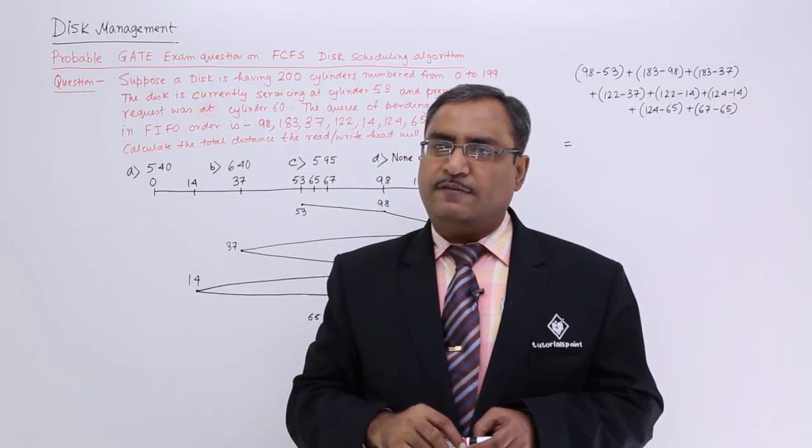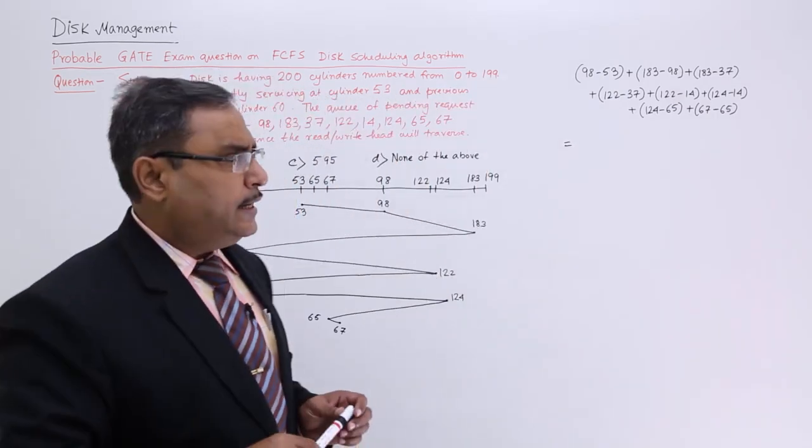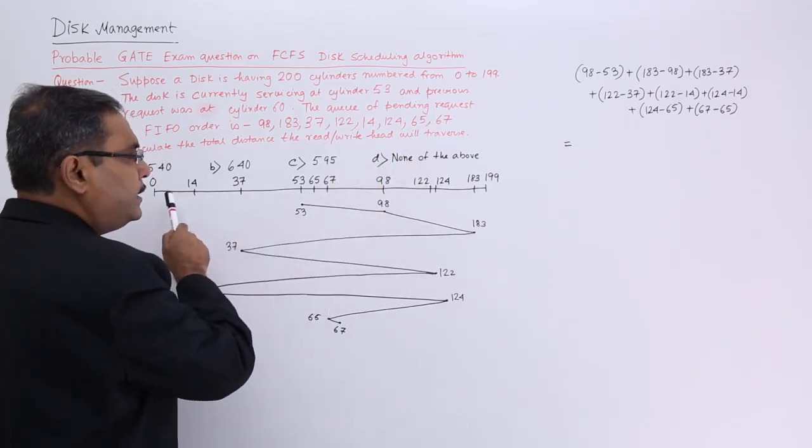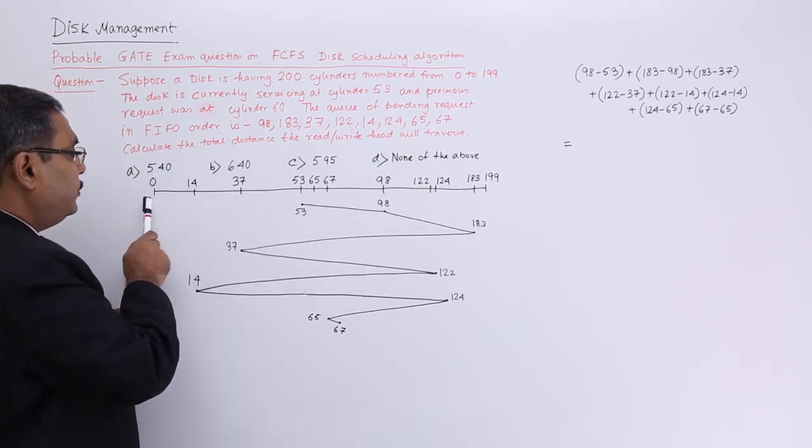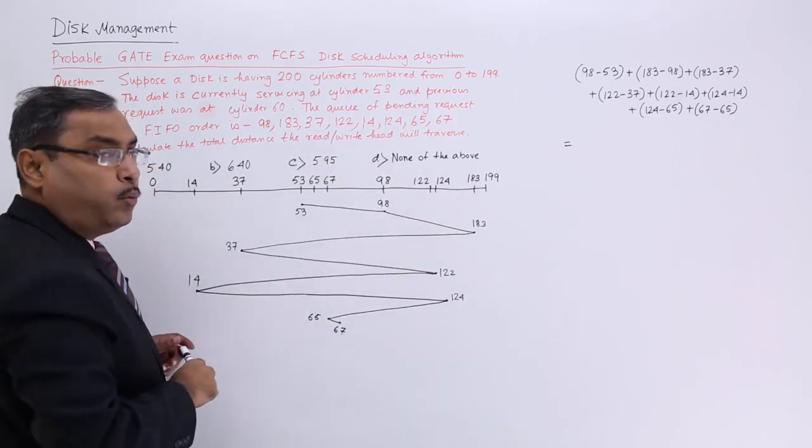And here you are using FCFS algorithm. So how to do it? You see here, all these numbers are written in ascending order.